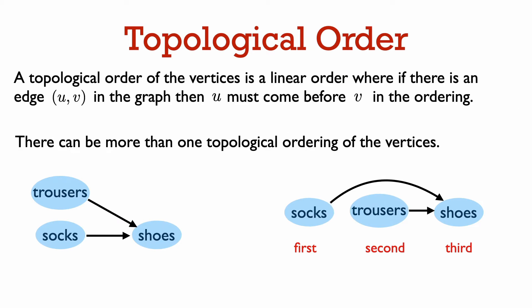There can be more than one topological ordering in a graph. We can put our socks and trousers on in any order. So we can also first put on socks, then put on trousers, second, and put on shoes, third. This is another topological order of the graph. A topological order is not necessarily unique.